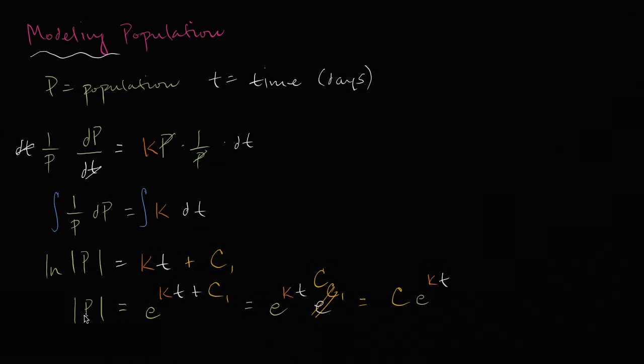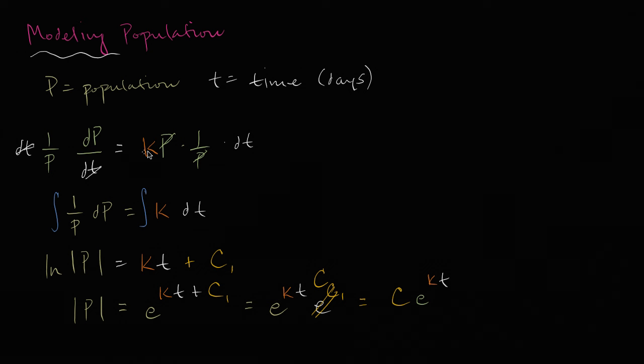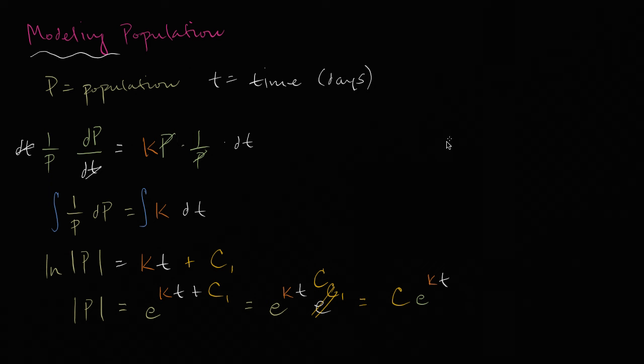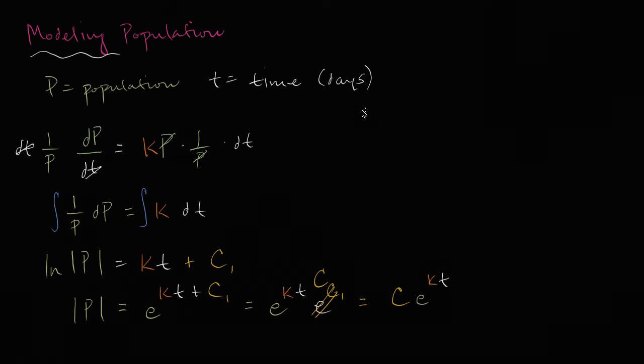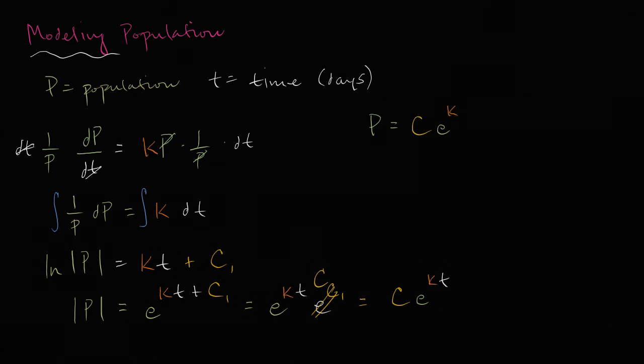And if we assume our population at any given time is positive, then we could get rid of this absolute value sign. Now we have a general solution to this, frankly, fairly general differential equation. We just said proportional, we haven't given what the proportionality constant is, but we could say if we assume positive population, that the population is going to be equal to some constant c times e to the kt power.